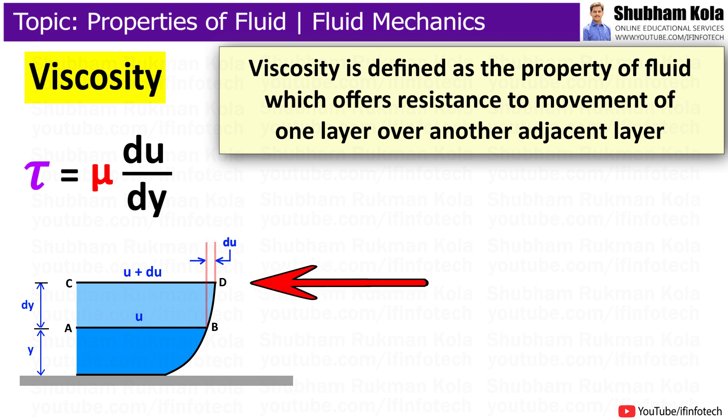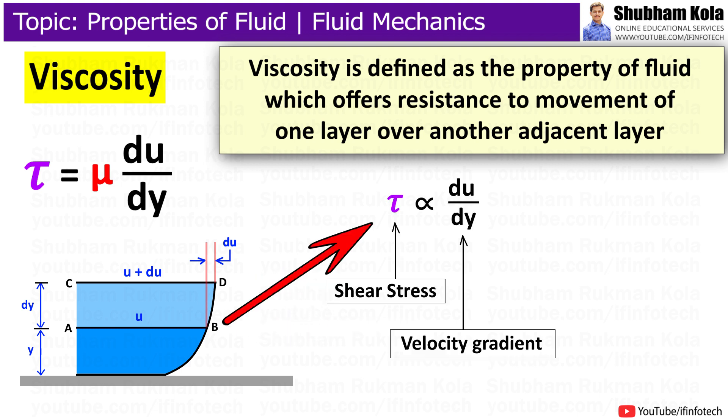The top layer CD causes shear stress on lower layer AB, and the lower layer causes shear stress on the upper layer. This tangential shear stress is proportional to velocity gradient, that is du/dy, in the direction perpendicular to the fluid layer.